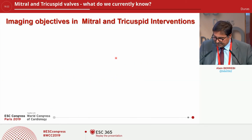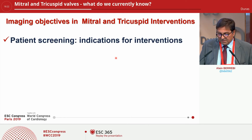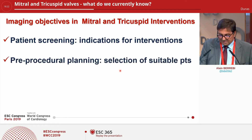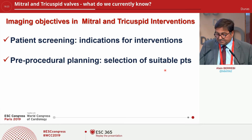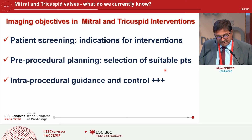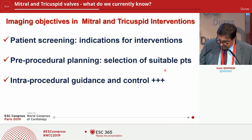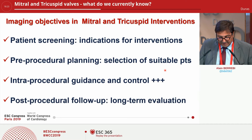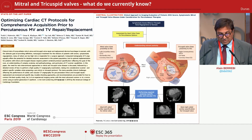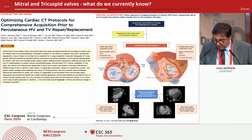What about the multimodality objectives? First of all, for patient screening and indication for intervention, ECHO plays a major role. For pre-procedural planning, particularly the selection of suitable patients, CT scan is particularly important. Intra-procedural guidance and control is key for intraoperative ECHO, particularly 3D and sometimes fusion, if you have it in your center. And finally, don't forget the post-procedural follow-up long-term evaluation with ECHO. I recommend a very good paper just published on cardiac CT protocols for mitral and tricuspid valve repair and replacement, which summarizes all the goals of CT scan in this field.